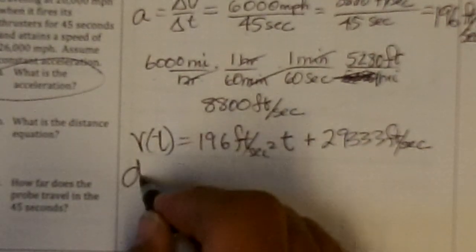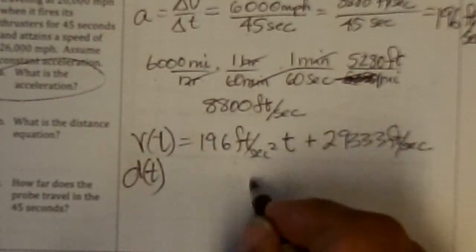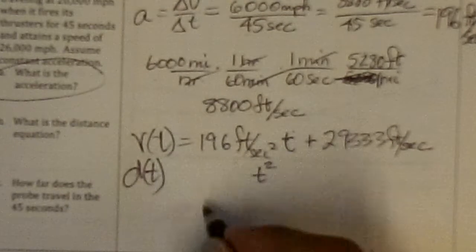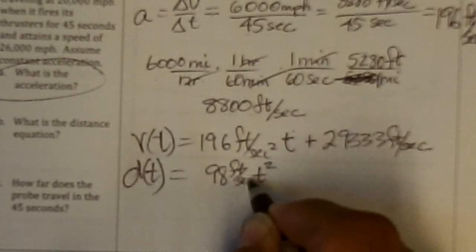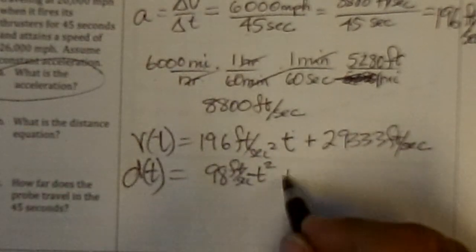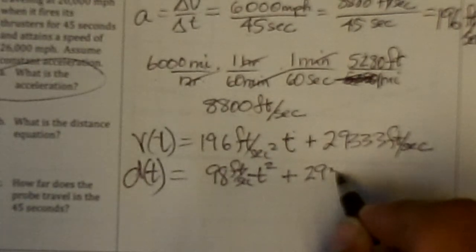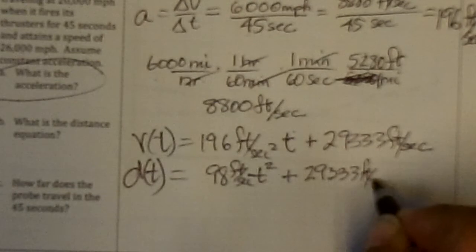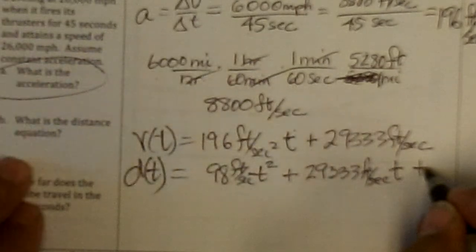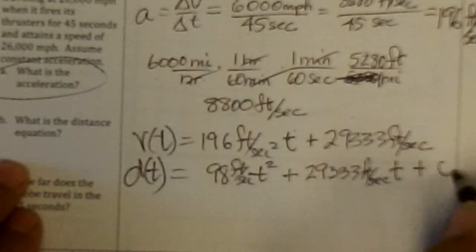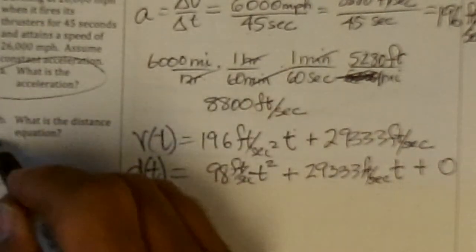And so the distance equation, I have to integrate this again. So this would be t squared goes to power 2. So I have to divide by 2, which is 98 feet per second squared times t squared, plus 29333 feet per second times t, plus initial distance. And I'll say that's 0 because we're starting, just say it's wherever we're starting to count this at. So that's B.